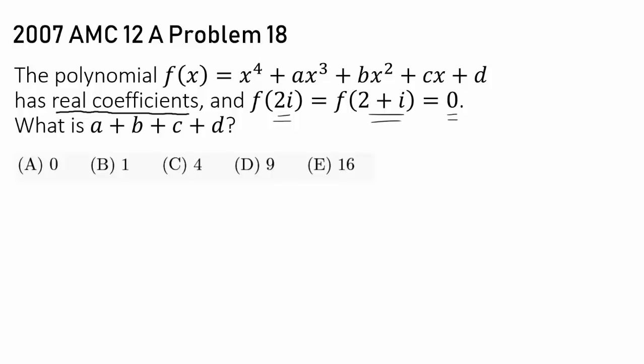Since the polynomial has real coefficients, that tells us that negative 2i and 2 minus i are zeros as well. So that's what we're starting out with.